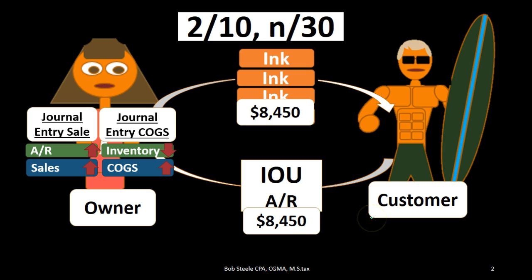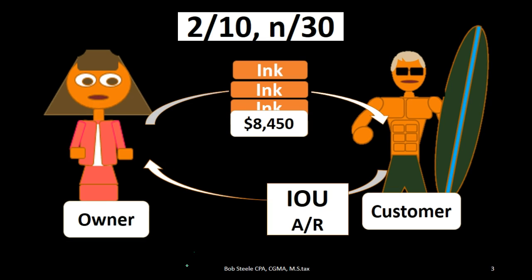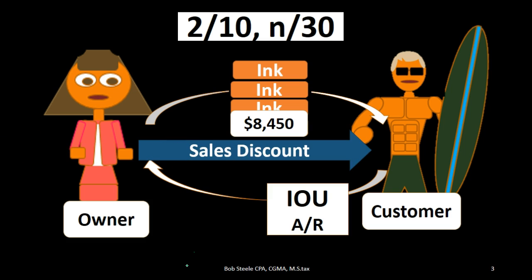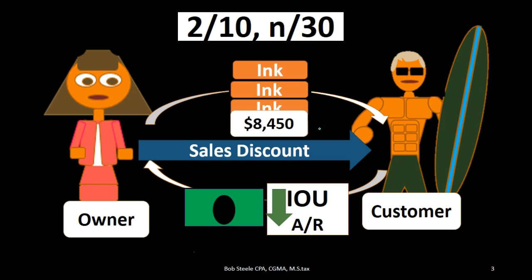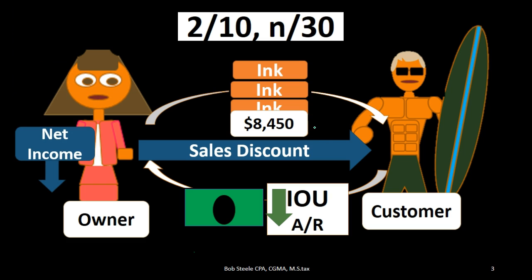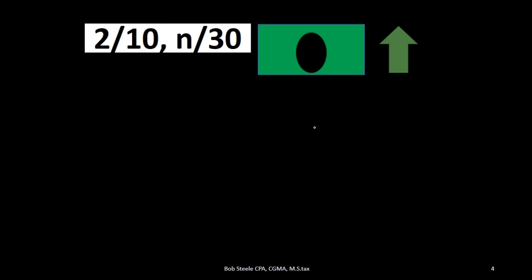It's possible for the customer to pay less than that if payment is received within 10 days. If the customer pays within 10 days, the owner will provide the discount. The impact is that the IOU goes down — the owner would not owe the entire $8,450 on our books as a receivable — and therefore the cash we ultimately receive as the owner would be less than $8,450. Also, net income will go down.